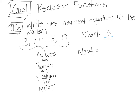Your NEXT is going to equal whatever the NOW is, plus whatever's happening to get the NEXT number. Here the first number is 3, then 7, then 11, then 15 — you can see it increases by 4 each time. So it's just going to be whatever the NOW is, plus 4. That is the answer for that one.